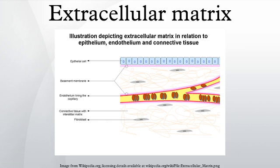However, cell adhesion, cell-to-cell communication and differentiation are common functions of the ECM. The animal extracellular matrix includes the interstitial matrix and the basement membrane.